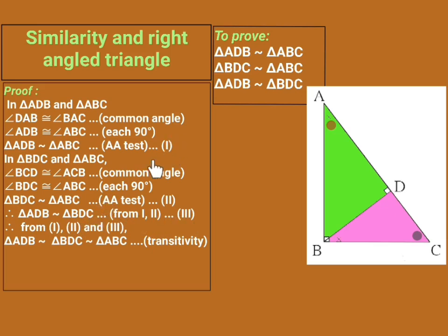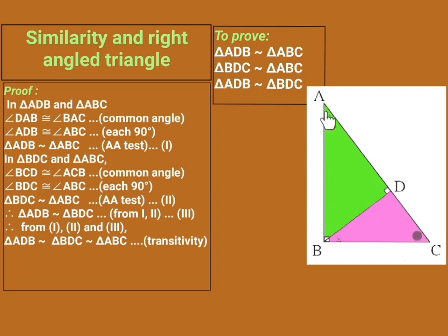From statements one, two, and three, these three triangles are similar to each other: triangle ADB is similar to triangle BDC is similar to triangle ABC. In this way we have proved that the two triangles formed are similar to each other and similar to the original triangle. We have reached our target. Thank you.